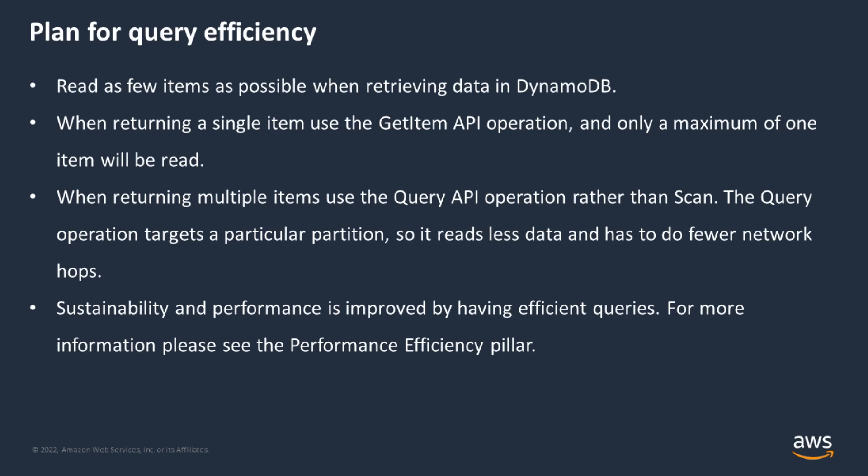When using a Query operation, we also have different options for filtering data. This can be done with a key condition expression or a filter expression. Key conditions allow filtering on the sort key, and this is efficient because not all the data needs to be read — it works like a B-tree index, taking advantage of the ordered data set. For a filter expression, this operates on the non-key attributes, and we have to read the data from disk before we apply that filter, which uses additional resources. So using a key condition expression is always going to be more efficient in terms of sustainability than using a filter expression.